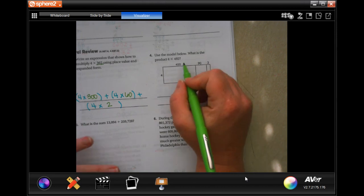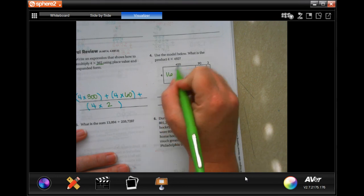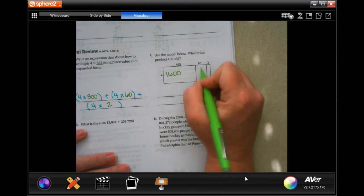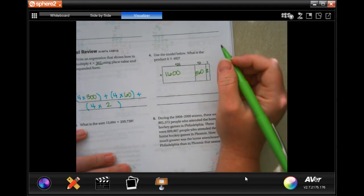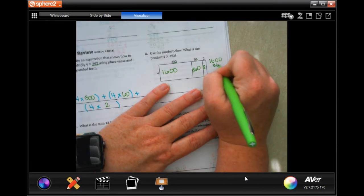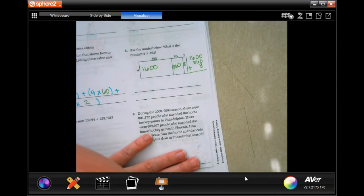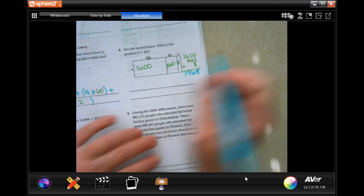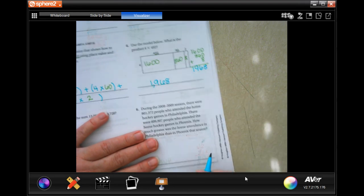Use the model below. What is the product of four times 492? Well, four times four is 16. I'm going to add those two zeros in. Four times nine is 36. I'm going to add that one zero in. And four times two is eight. So, now I'm going to come over to the side and I'm going to add up all those numbers. And I'm going to get eight, six, nine, one. So, it's going to be 1,968. Done.